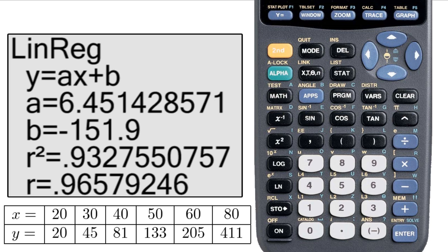It says that the line is of the form AX plus B, then it tells me what A is and what B is. It also tells me what R squared and R are. This, more or less, tells you how close the line is to the points. The closer to positive 1 they are, the better. This is what Diagnostic On did. If we hadn't done that, these two things would be missing.